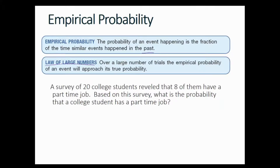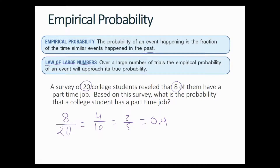For example: a survey of 20 college students reveals that 8 of them have a part-time job. Based on the survey, what is the probability that a college student has a part-time job? We have 8 students with a part-time job out of 20 total students, so the probability is 8/20, which equals 4/10, or 2/5, or 0.4, or 40%. We can say 40% of students have a part-time job, but this is based only on a sample of 20 students.